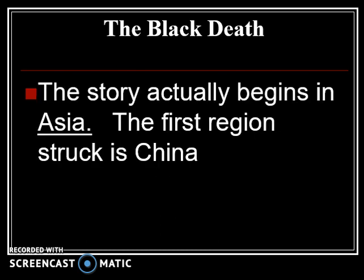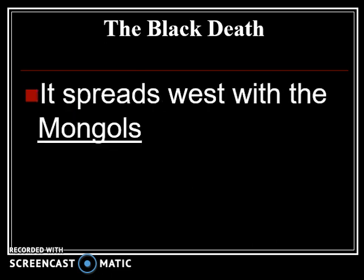The story begins in Asia with the spread of this plague. The first region struck is China — the very first place that this disease begins and has started to spread. It spreads west with the Mongols. In fact, the Mongols are going to use it as an original form of germ warfare, and they're going to intentionally infect people who are their enemy.